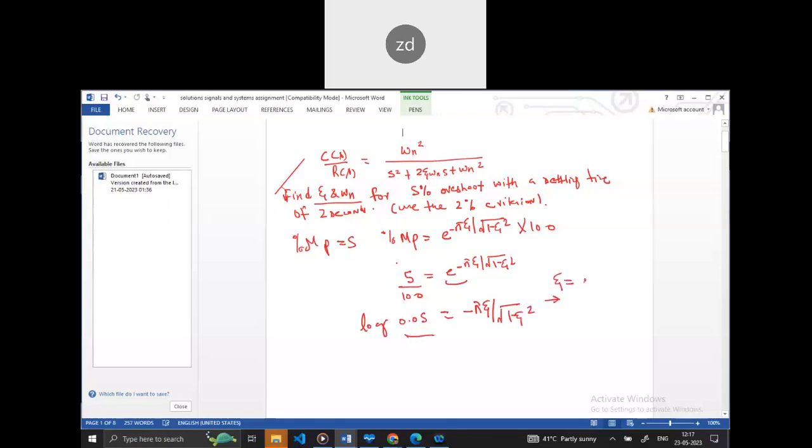The zeta value would be 0.69. And after that, look at the 2% settling time: Ts is equal to 4 divided by ζωn. For 2% criteria, this formula is used.